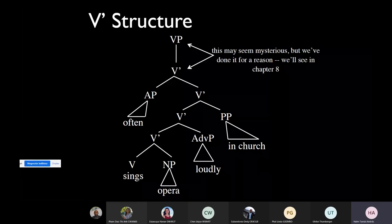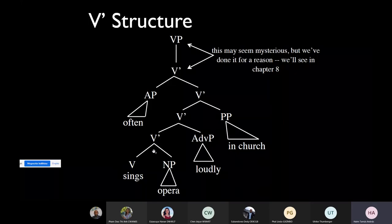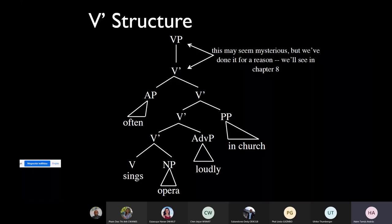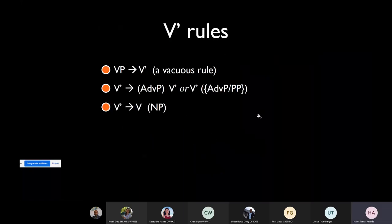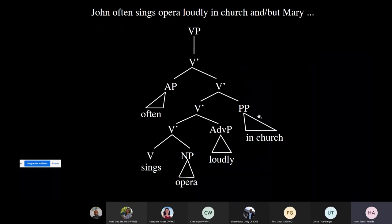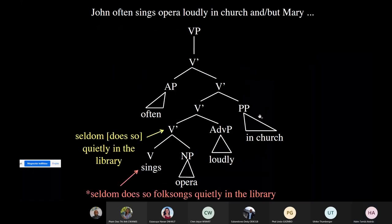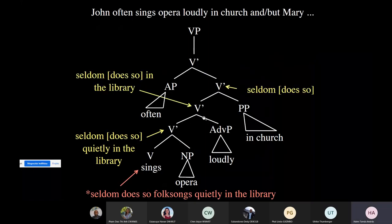So we tried the same trick: what happens if we represent verb phrases as binary branching, and in between the VP and the V there are multiple V-bar levels? It turns out that this does the trick for us very nicely — we can replace V-bar constituents with 'does so.'